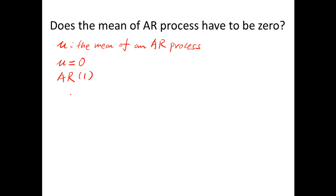When mu equals zero, then we should write AR1 like this. Xt, which is the current value in the time series, equals phi 1 times Xt minus 1 plus epsilon t. Epsilon t is the error term of the time series.